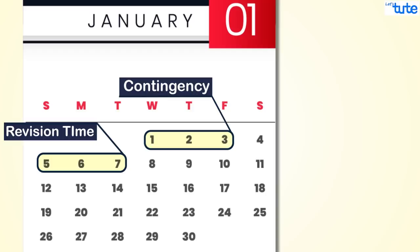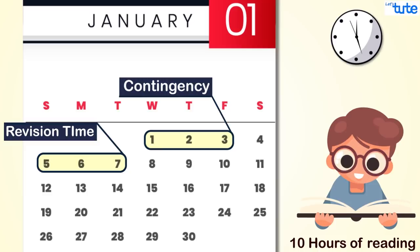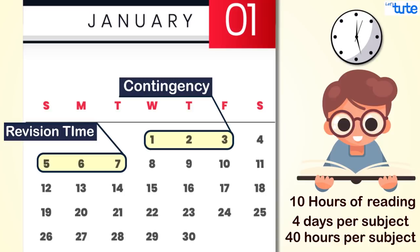Now we have 24 days balance. You can spend total 10 hours for reading the content of specific subjects. So that means you have got 240 hours. That means you can spend four days per subject or 40 hours per subject.